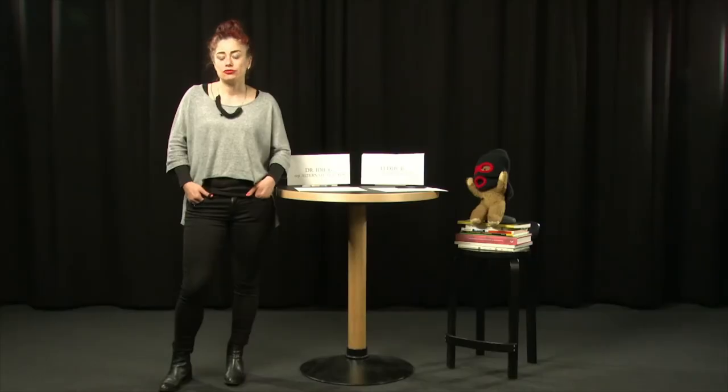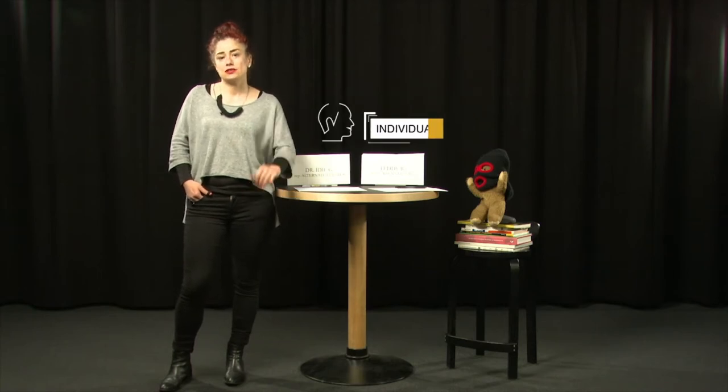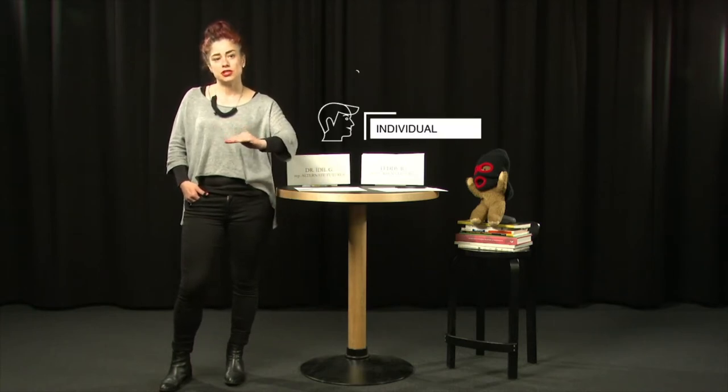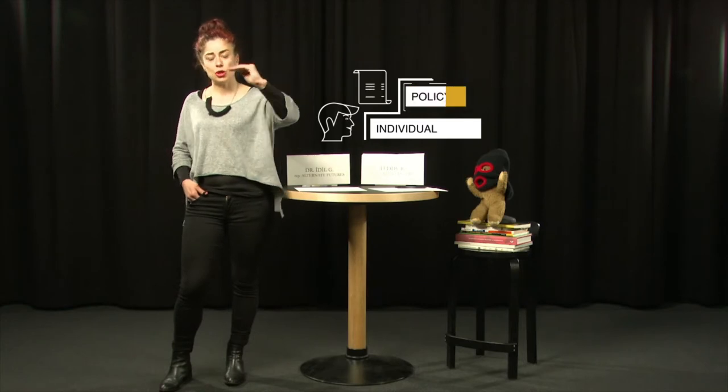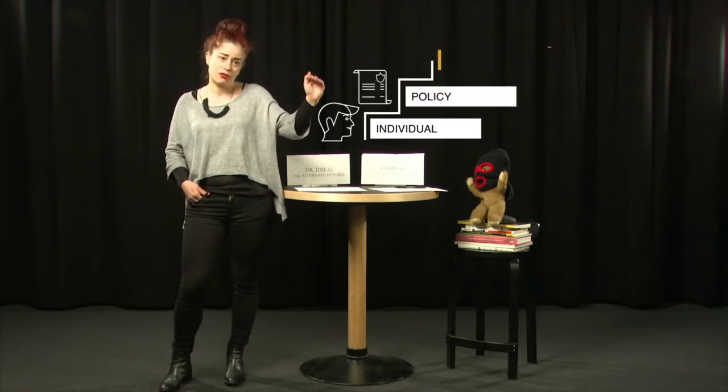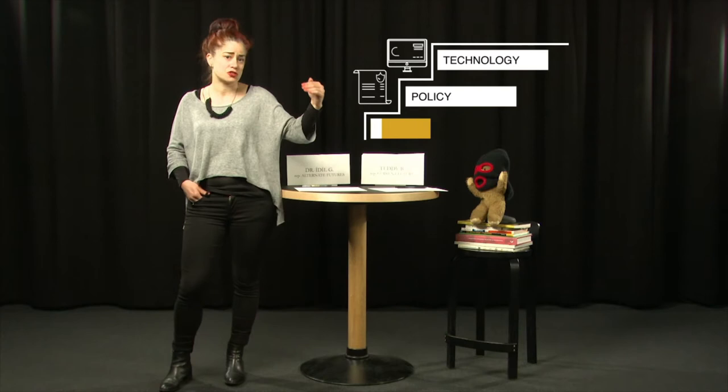The action needs to happen at least at three levels all together to create new systems, new sustainable systems. So change at the level of the individual, change at the level of policy, and change at the level of technologies, infrastructures, and pretty much everything that human society creates and builds.